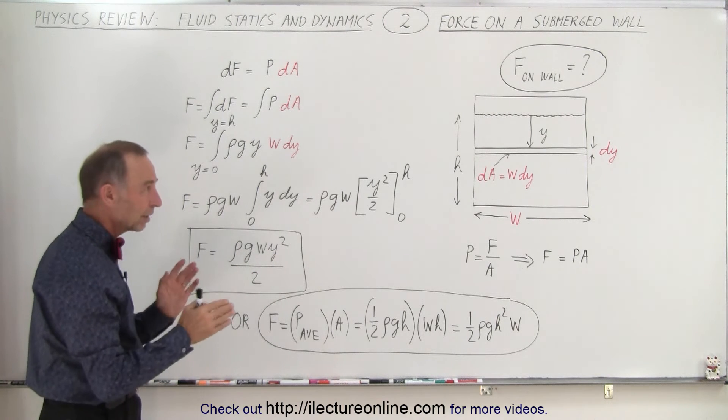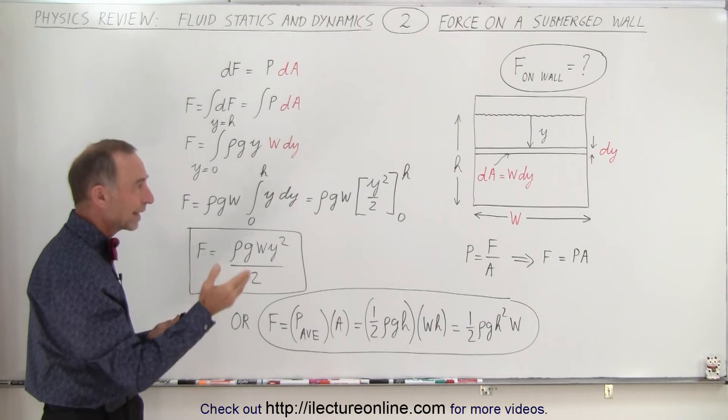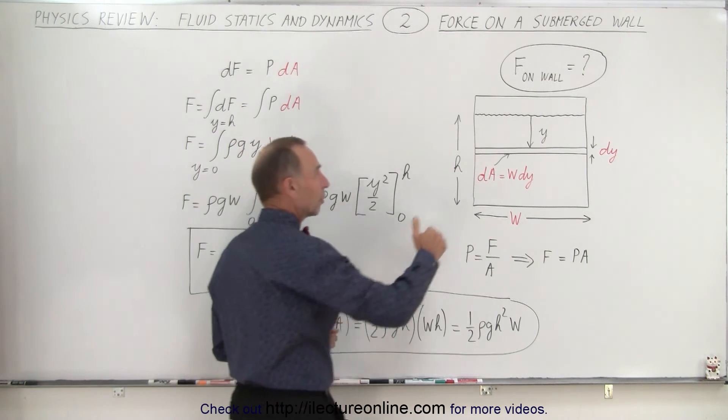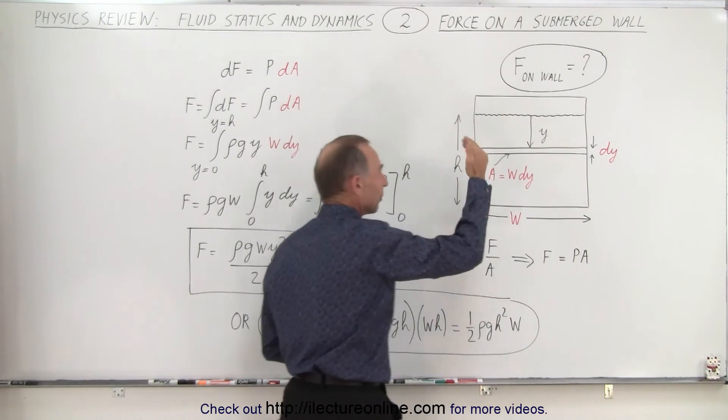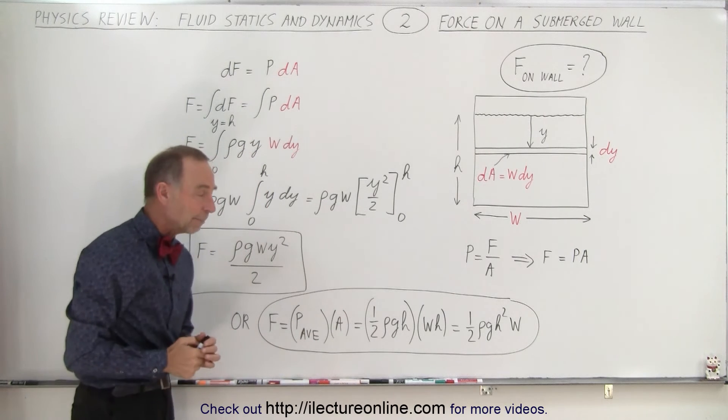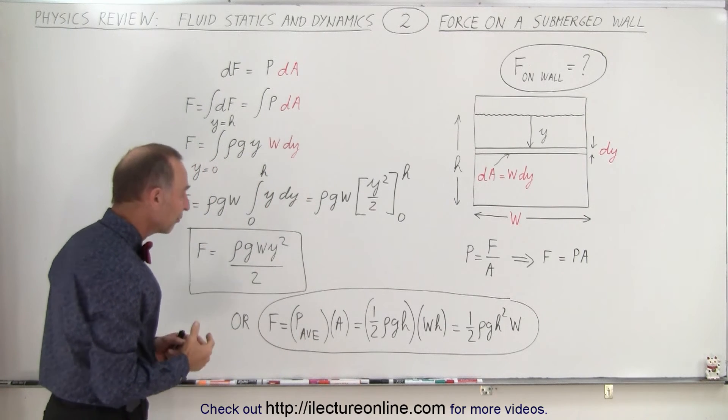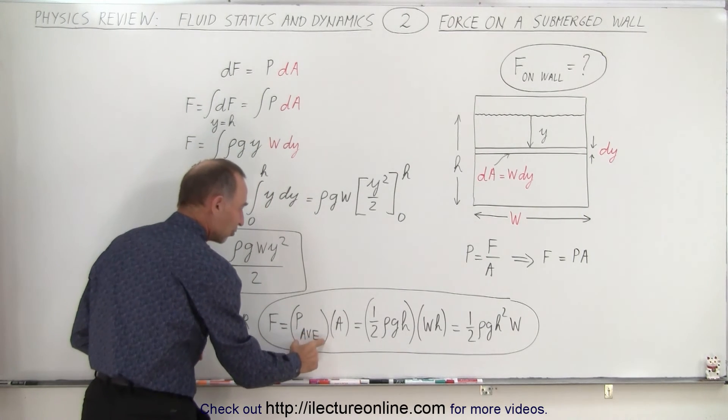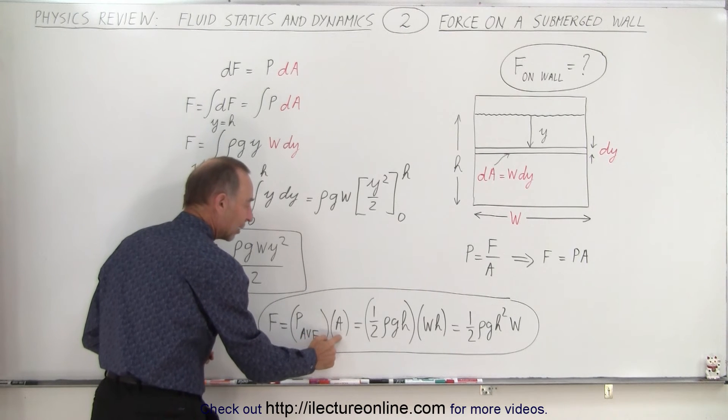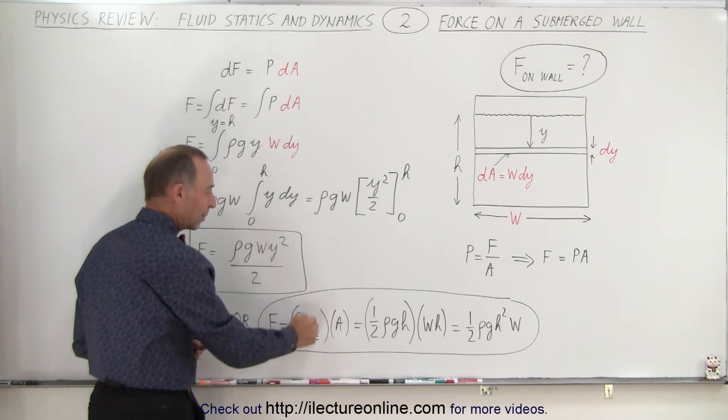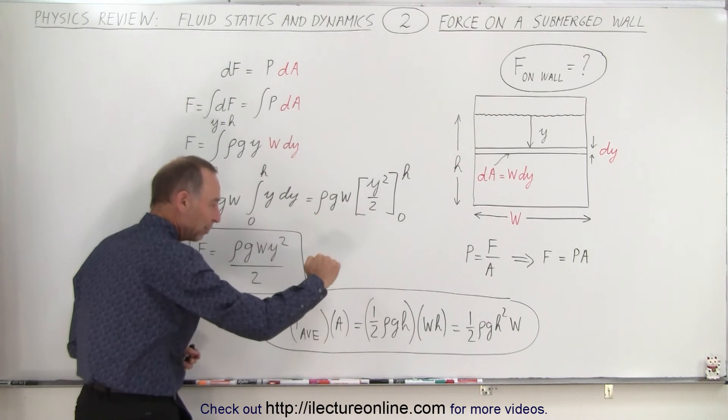Now it turns out since the relationship between pressure and depth is linear, so as you go down further the pressure increases as a function of depth. Therefore we can also find the equation by taking the average pressure on the wall times the area of the whole wall.